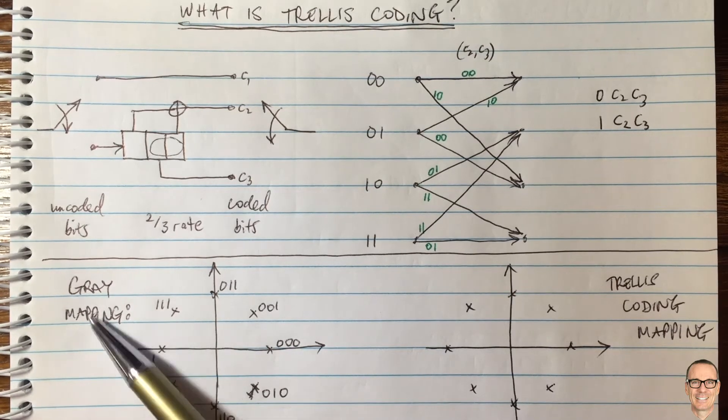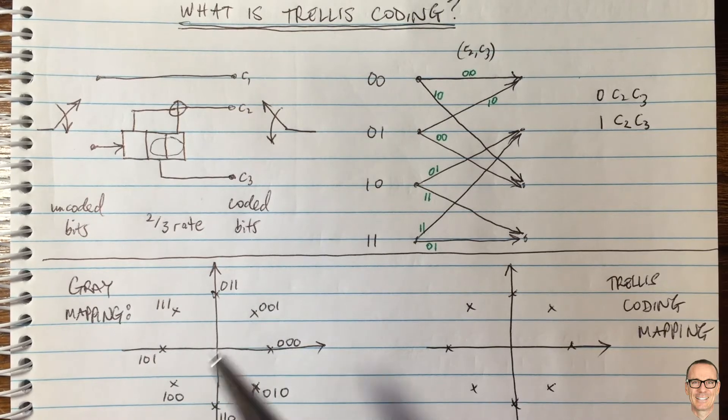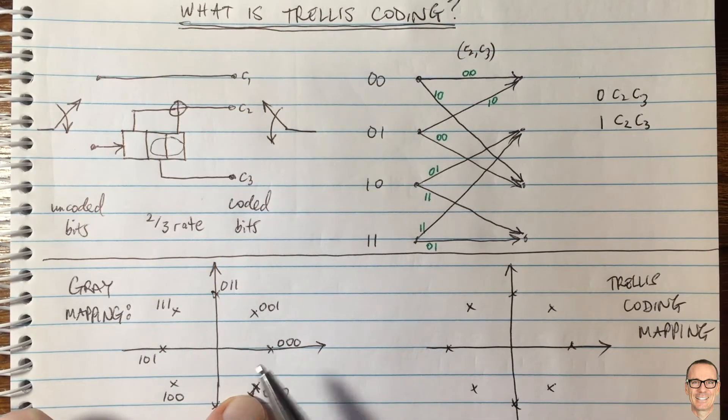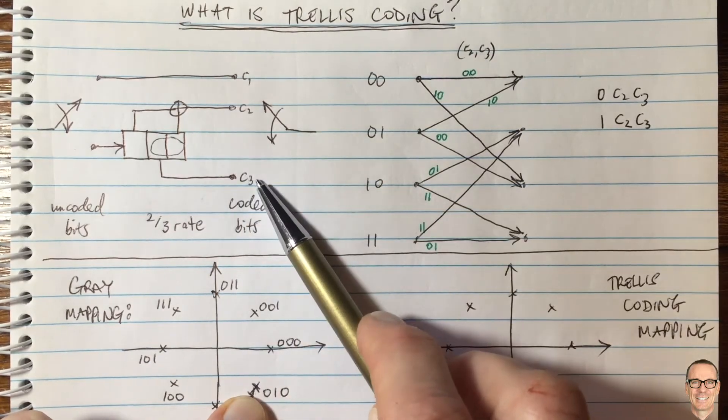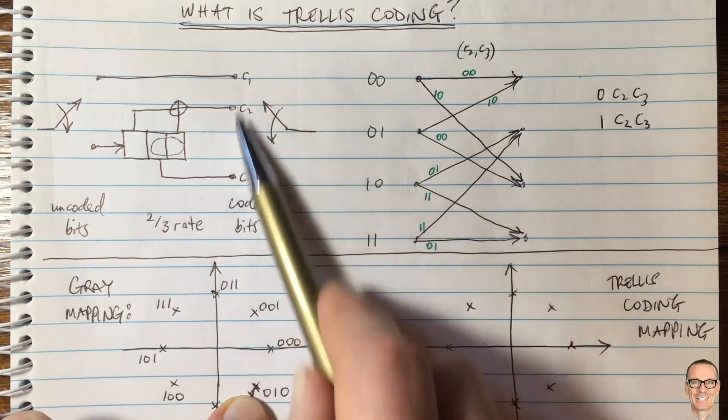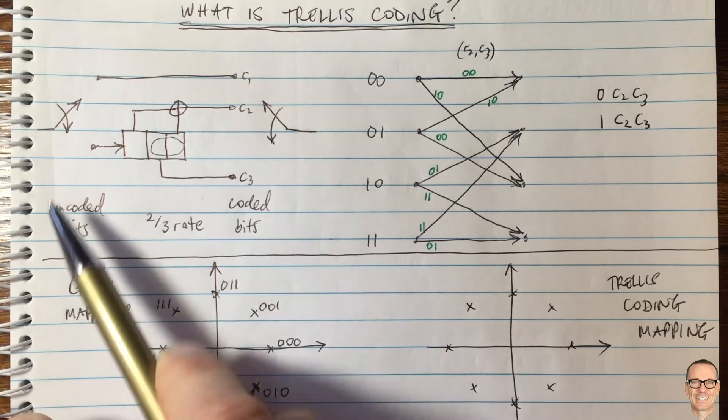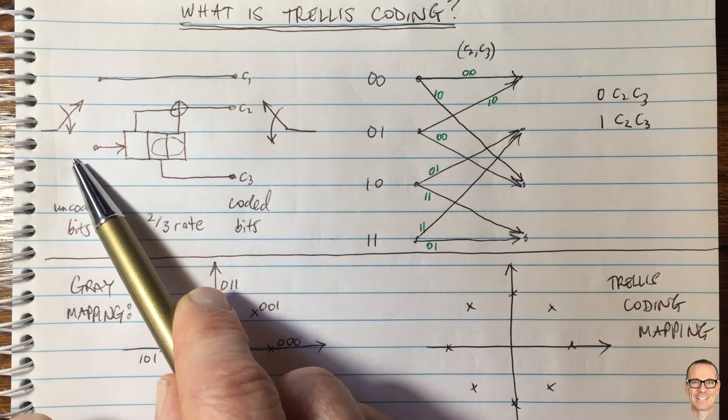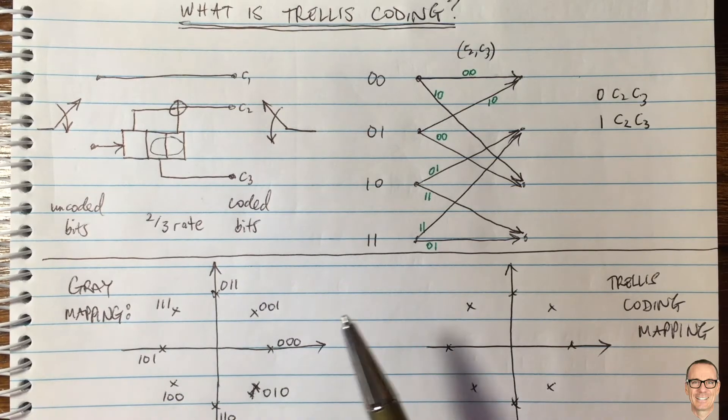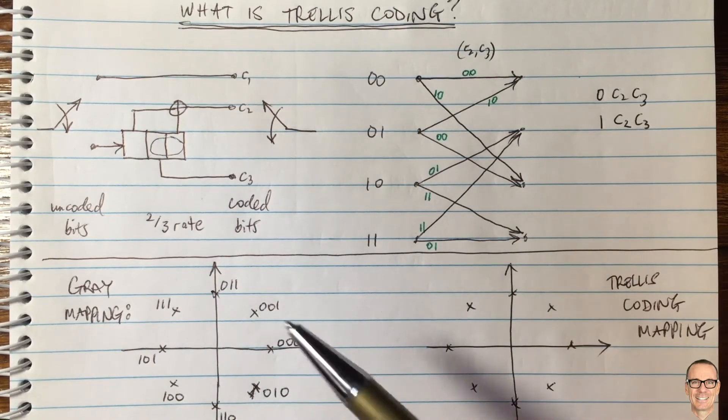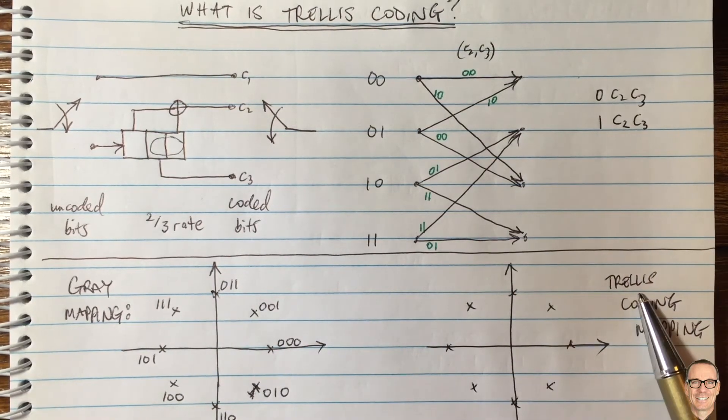Well, this is gray mapping. And this makes sense if you are doing every detection just on its own. So if there is no structure in the data symbols, there's no structure in the code, if there's no code and the data is independent from one time slot to the next, then gray mapping is the best thing to do. But in trellis coding, you want a different mapping. And that's one of the keys to trellis coding.